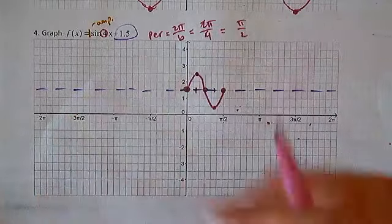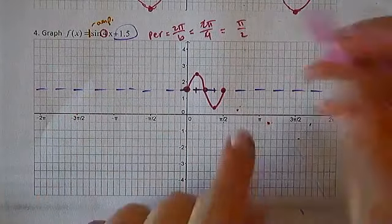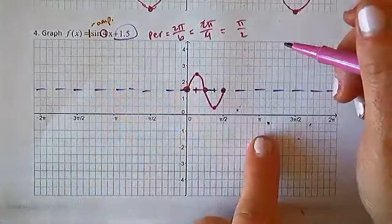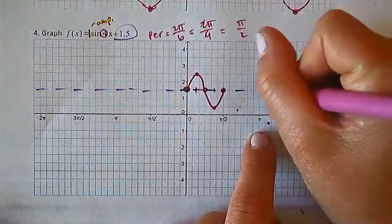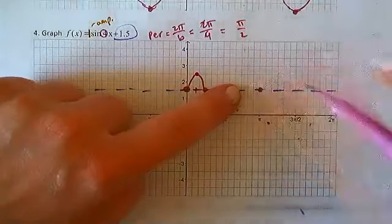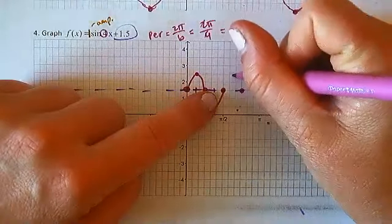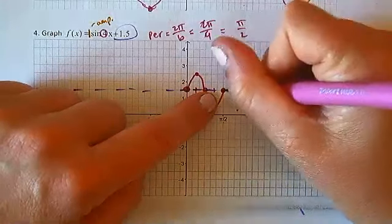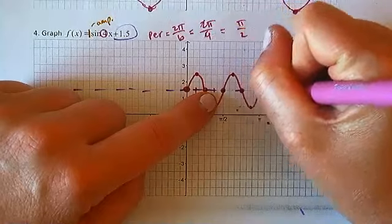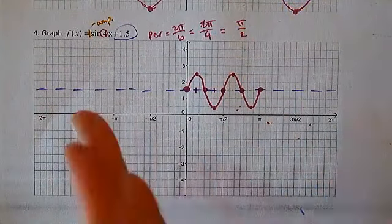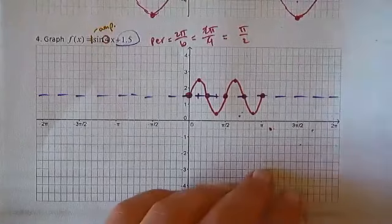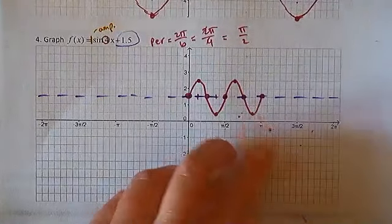Start on the y-axis at the midline; finish at pi over two on the midline. Then use the halfway method: count halfway, mark, count halfway to each quarter, mark. At the first quarter point go up one unit — two boxes — and at the third quarter point go down one unit. Connect all five points — there's one period. Do the same for a second period ending at pi.